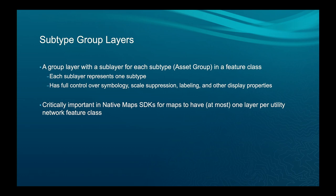On the native Maps SDK side, it is critically important that every map have one layer per utility network feature class. That's because of the way native Maps SDKs take data offline. We'll have a talk tomorrow where we go into details about why that is and how it works.